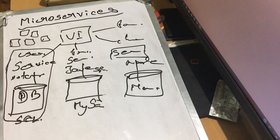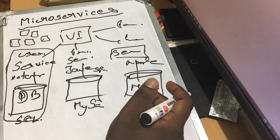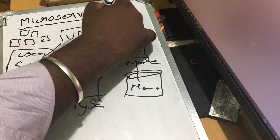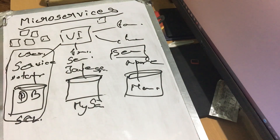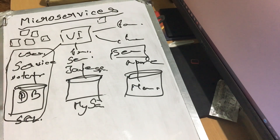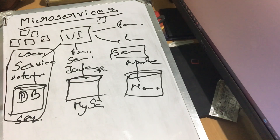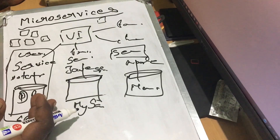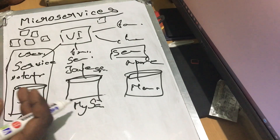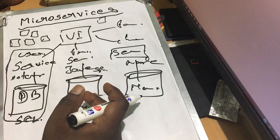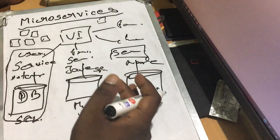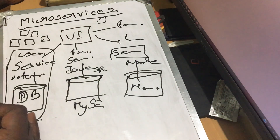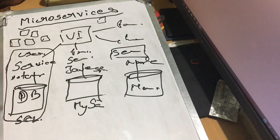For example, the checkout and payment service can run on a single server. But if you need to scale the search functionality, you can spin up a new container for that. You can split services across teams — if one team handles the user module, they can develop and deploy it independently from the checkout module team.